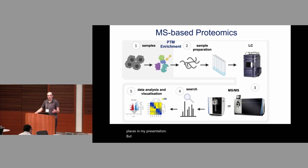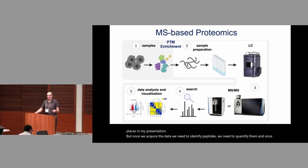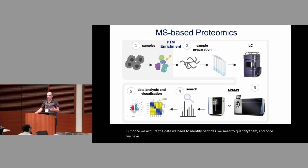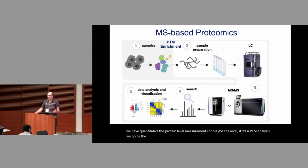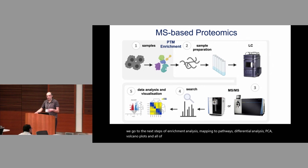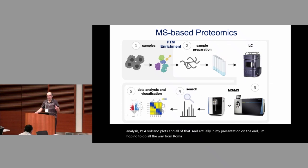Once we acquire the data we need to identify peptides and quantify them. Once we have quantitative protein-level measurements — or site-level measurements if it's a PTM analysis — we go to the next steps: enrichment analysis, mapping to pathways, differential analysis, PCA, volcano plots, and all of that. In my presentation I'm hoping to go all the way from raw mass spec data to a PCA.